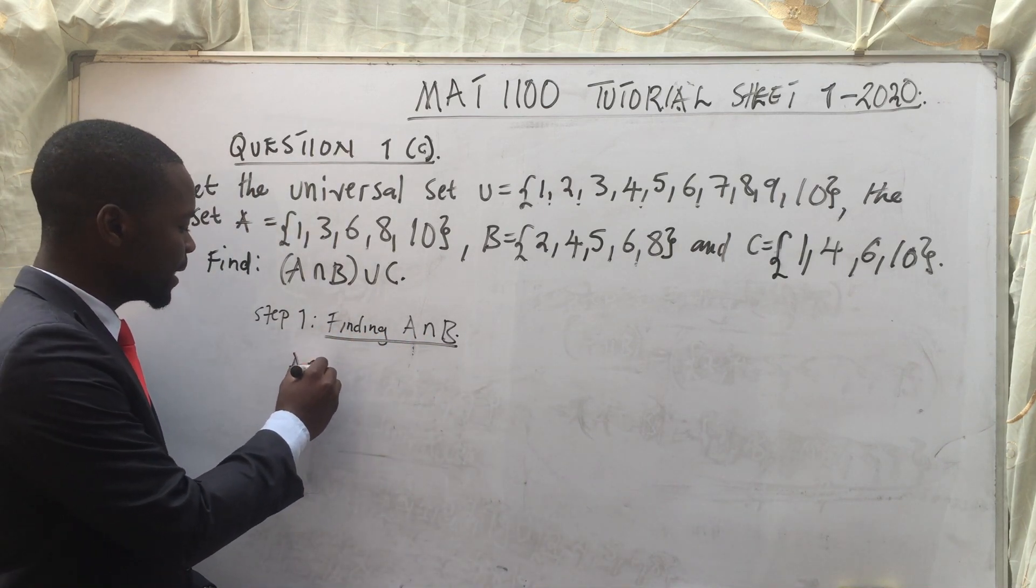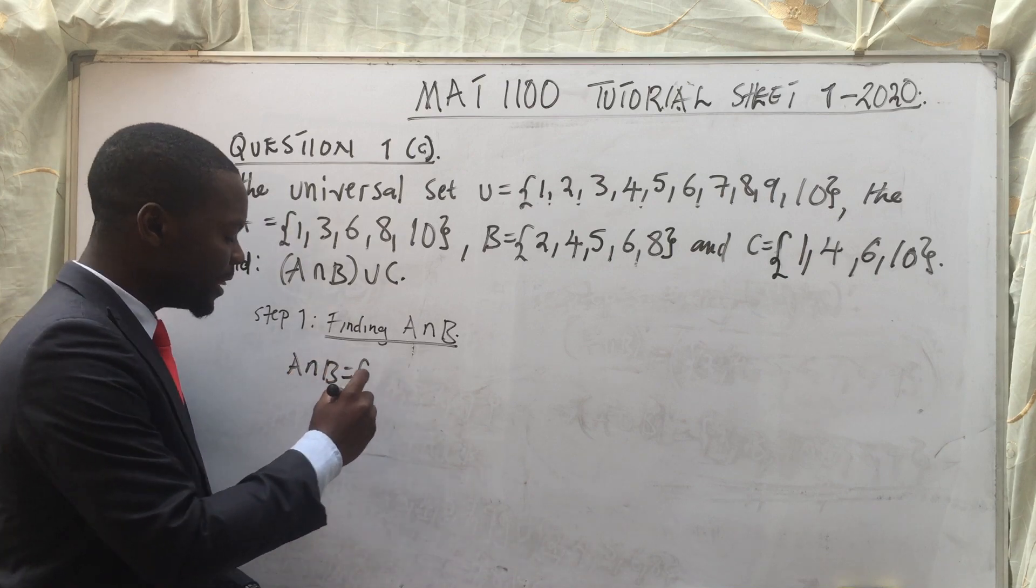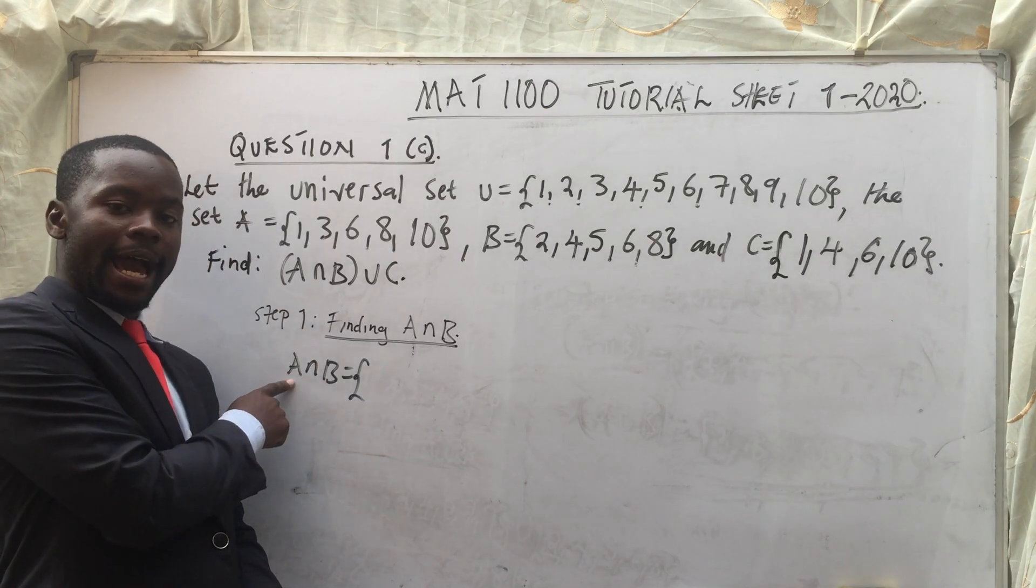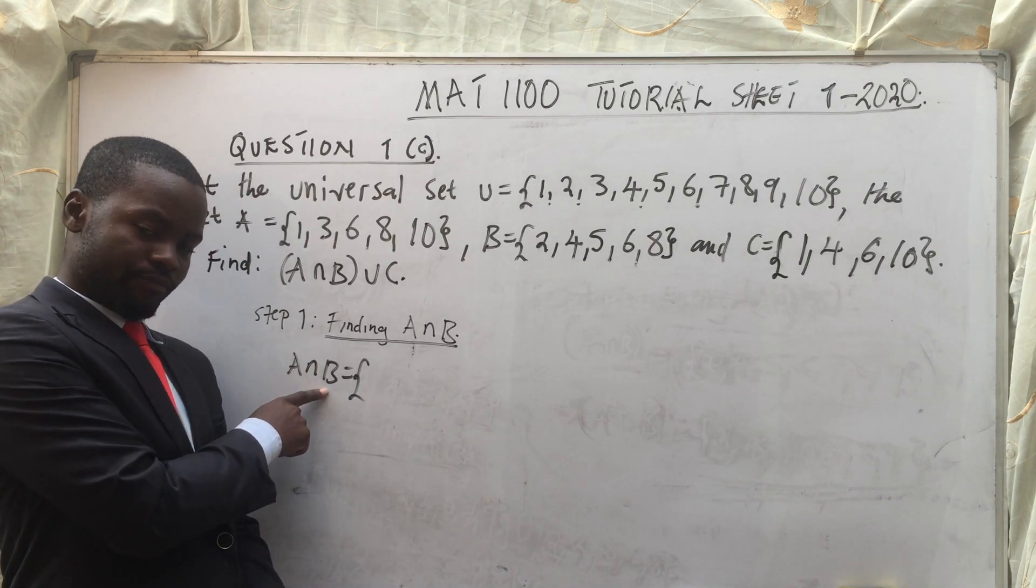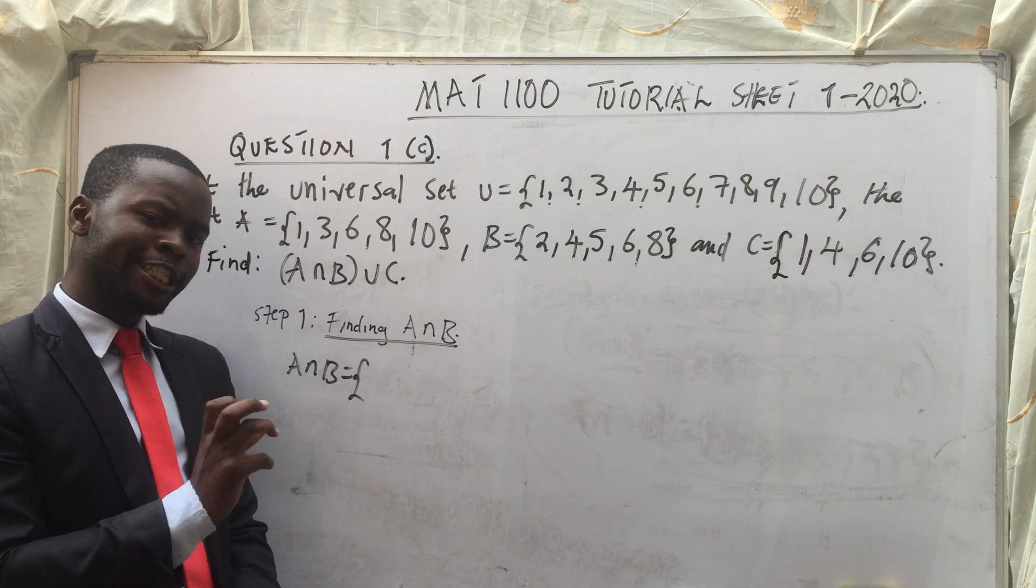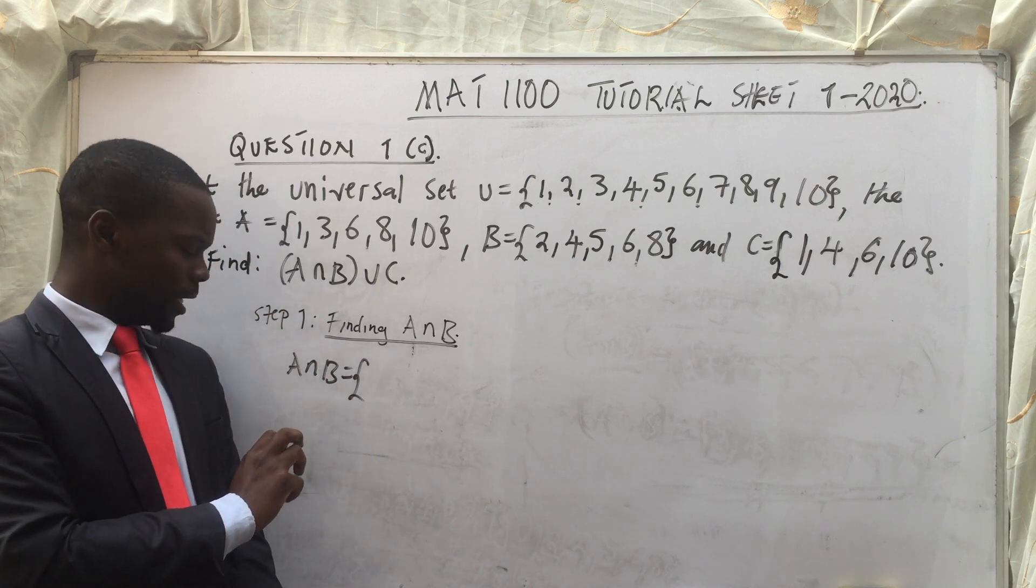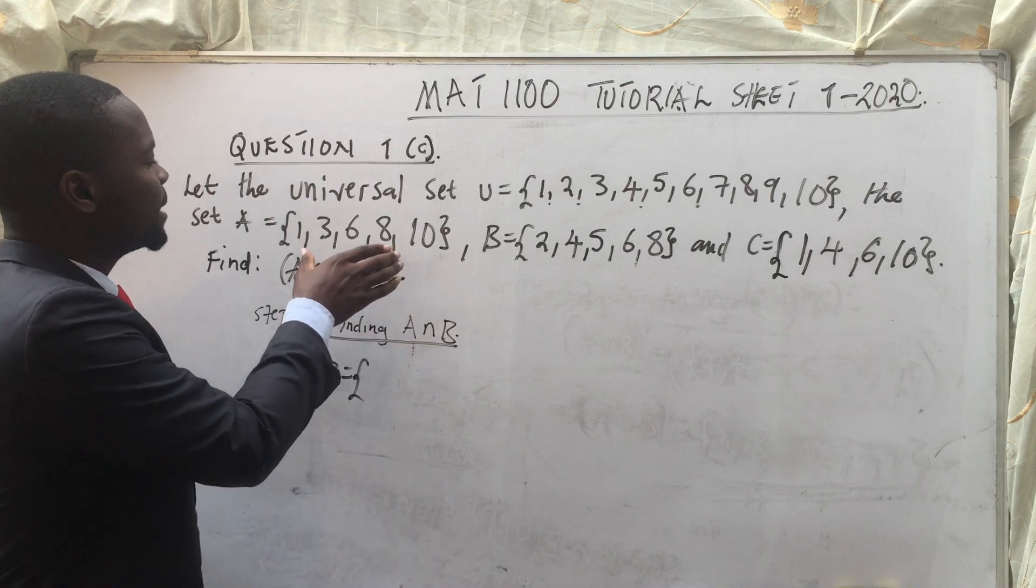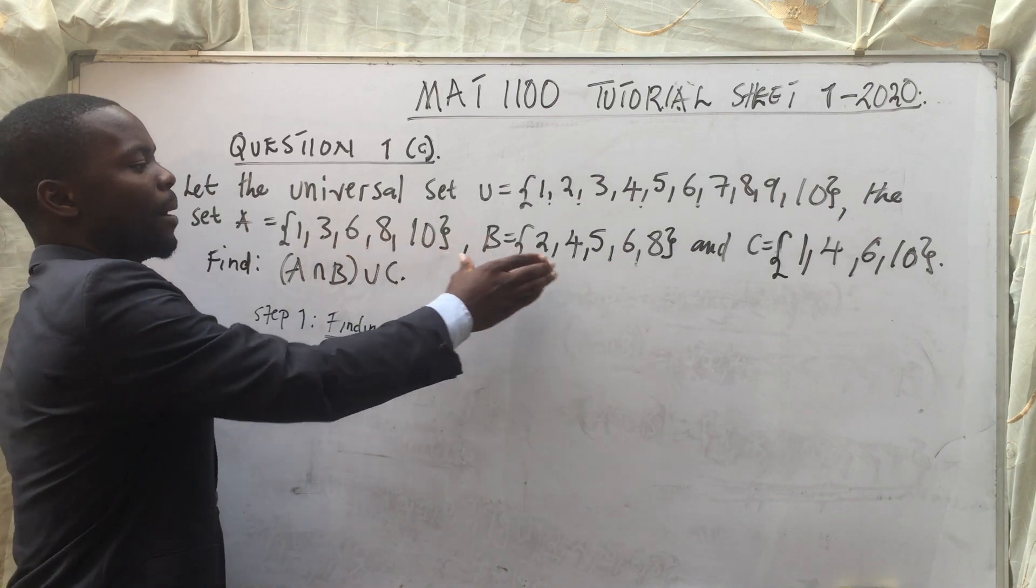So A intersection B, these are simply elements which are found in set A, and they are also found in set B. So the elements which are common, both in set A and B. As you can see, this is our A, this is our B.